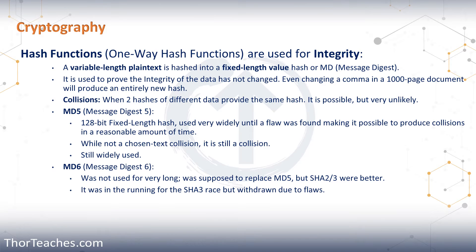The first hashing algorithm we will look at is MD5, or Message Digest 5. There was a flaw in the algorithm making collisions possible. MD5 has for many years been the hashing algorithm of choice — it produces a 128-bit fixed-length hash. Given enough time, any hashing algorithm can produce a collision; the question is how much time is reasonable, and whether it is random text or chosen text. Chosen text is where you choose the file that needs to look like something else — embedding malware so the modified software produces the same hash. That is much harder than random text, and not what we saw with MD5.